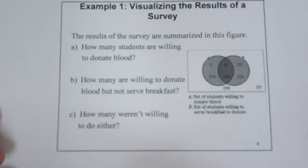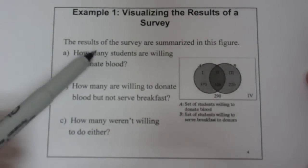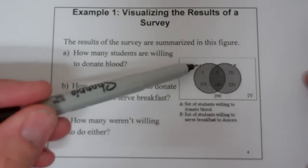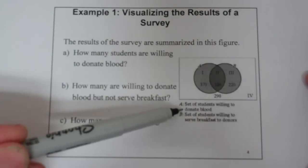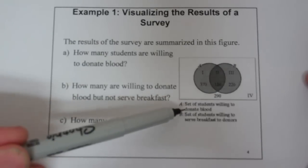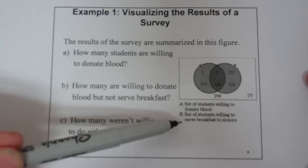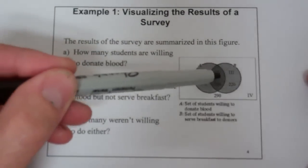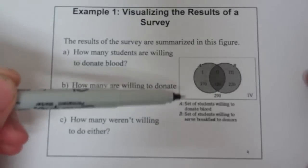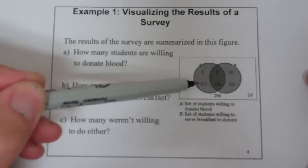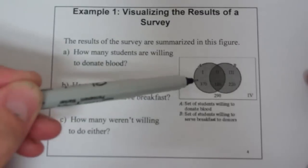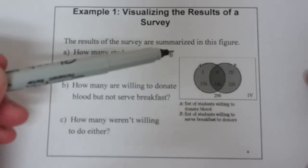We have our blood sample. The results of surveys are summarized in this figure. Here in A, we have the set of students willing to donate blood — it's always very important to define your set. And B is the set of students who are willing to serve breakfast to the donors. Here's set A, and in Region 1, we have 370 students. These 370 are in the set of willing to donate blood but not in the set of willing to serve breakfast.